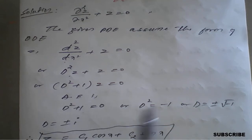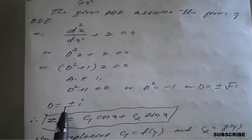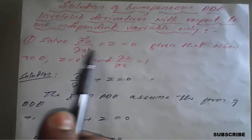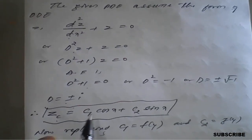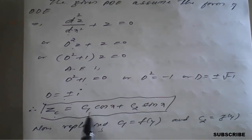Since the right-hand side is 0, we only get a complementary function — no particular integral. The auxiliary equation is D² + 1 = 0, giving complex roots with real part 0 and imaginary part 1. The complementary function is z_c = c₁cos(x) + c₂sin(x), but since the equation is in terms of z, we write it accordingly.